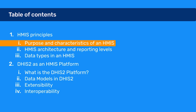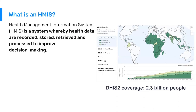We're going to start with the HMIS principles. An HMIS is a health management information system whereby health data are recorded, stored, retrieved, and processed to improve decision making. In this picture, we see the extent to which the DHIS-2 software is used as an HMIS.